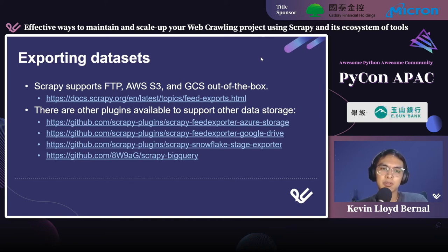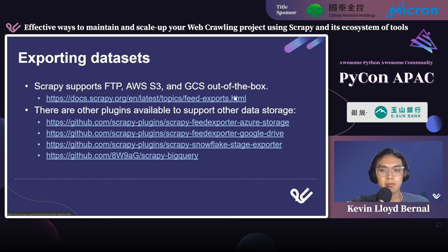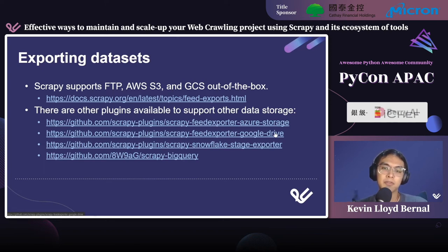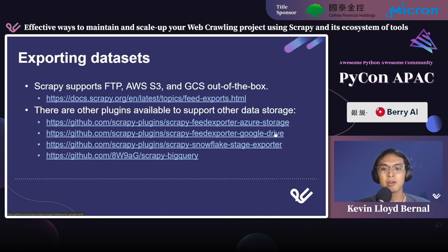Another thing to consider when productionizing spiders is exporting datasets. Out of the box, Scrapy supports FTP, S3, and GCS. There are also other plugins available for Azure storage, Google Drive, Snowflake, BigQuery, and so on. Alternatively, you can write your own plugin to support custom data integrations such as PostgreSQL or MongoDB.